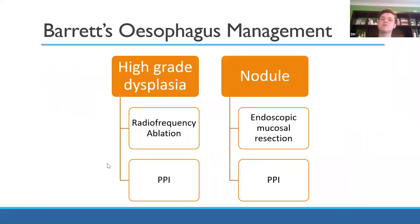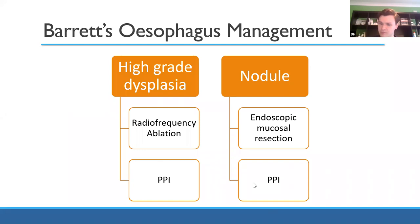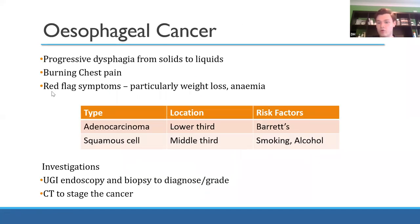How do you manage Barrett's? It depends on the type and extent of change. If it's a single nodule, you can simply excise it. If it's widespread, you ablate it using radiofrequency waves. Regardless, give a PPI to treat the underlying GORD and prevent recurrence. If left untreated or unresponsive, it can progress to esophageal cancer — about eighth or ninth most common cancer in the UK, but with one of the worst outcomes because it's often caught late.